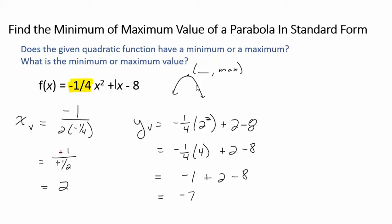All right, so that tells me that this vertex right here is at 2, negative 7. So the actual maximum value is negative 7. Can you have a maximum that's a negative? Absolutely.